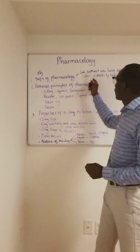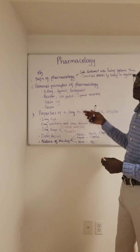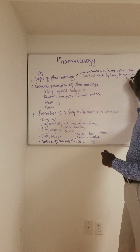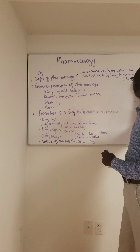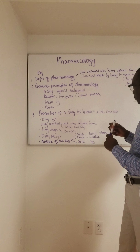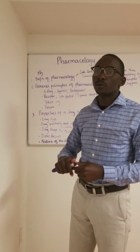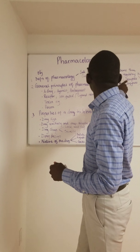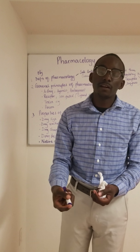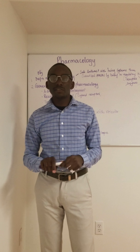To begin with the definition of pharmacology: pharmacology is the study of substances that interact with living systems through chemical processes. They do this by binding to regulatory molecules, which can be receptors or enzymes. When they bind to these regulatory molecules they activate or inhibit these molecules, hence eliciting a desired effect or inhibiting a body process.